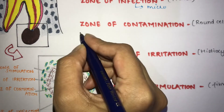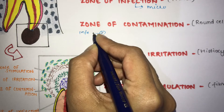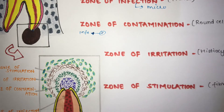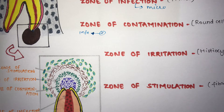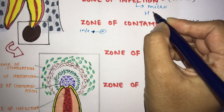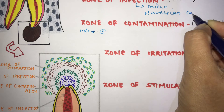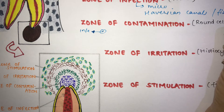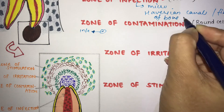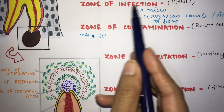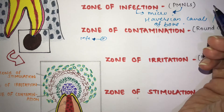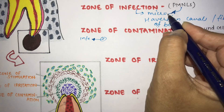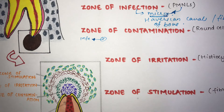When infection is present in the body, leukocytes come and attack the bacteria — this is the defense mechanism of the body. When leukocytes cannot dispose of a particular microorganism, those microorganisms are found in the Haversian canals or in the fissures of the bone. So in the Zone of Infection, microorganisms are present at the center of the lesion, and leukocytes attack them to destroy them.